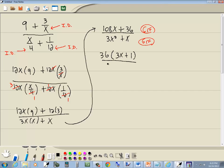Now down below, the gcf here is an x, so I'll factor an x out, and that gives us 3x plus 1.